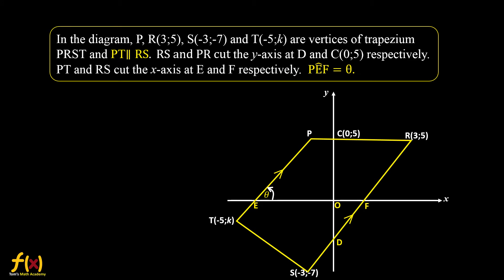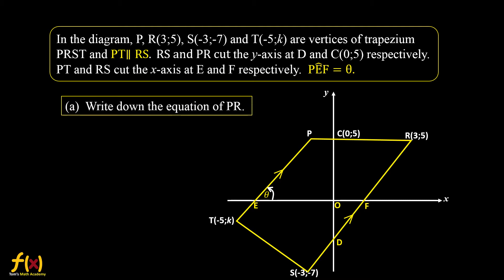In the diagram, PRSG is a trapezium, PT is parallel to RS, and angle PEF is theta. For question A, write down the equation of PR. Looking at line PR, we don't have the coordinates of P, but we have two other points C and R. The y-coordinate is 5 for both C and R, therefore PR is parallel to the x-axis. The equation of PR must be y = 5.